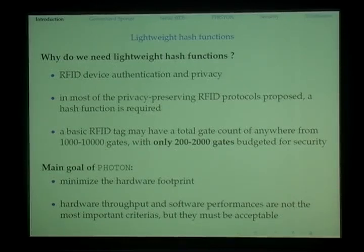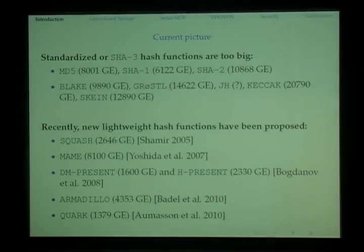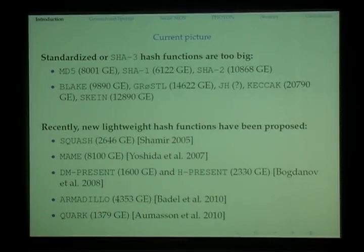Hardware throughput and software performance are not the most important criteria, but we must keep them in an acceptable range. If we look at current hash functions including the standards and SHA-3 finalists, they are not suitable at all. For instance, MD5, SHA-1, SHA-2 all have more than 6,000 gates, and all SHA-3 finalists have about 10,000 or more. Recently many lightweight hash functions have been proposed: the first is Squash by Shamir in 2005, followed by MAME in 2007.